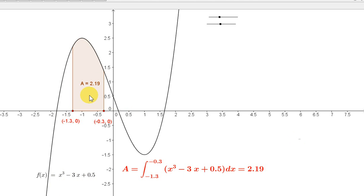For example, to get this area shown here in red, we have to get the definite integral of f of x dx from minus 1.3 to minus 0.3. And you can see that to two decimal places, the answer is 2.19.